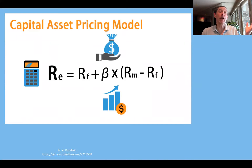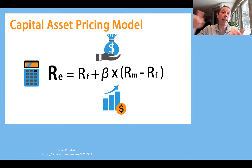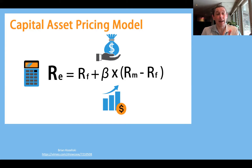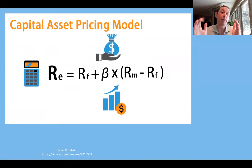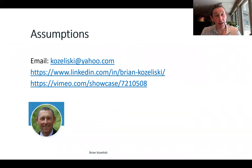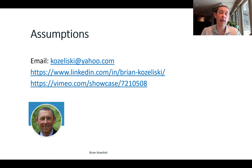Putting it all together: the expected return of our asset over the time period is a function of the risk-free rate, plus beta — that co-moving with the market that excludes idiosyncratic risk — times the difference between the market return and the risk-free rate of return. That is all the Capital Asset Pricing Model is. There are some assumptions built in and other things to cover, but I like to keep these videos short, so I'll follow up with another video going further into CAPM. Easy-peasy — that is about as simple as it gets, a very easy concept. Thank you so much for listening. I'm Brian Kozliski.